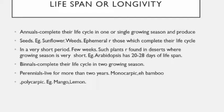Ephemerals are annual plants that complete their life cycle in a very short period of time — maybe a few weeks. Such plants are found in deserts where the favorable season is of very short span. Example is Arabidopsis thaliana, which has a lifespan of 20 to 28 days.